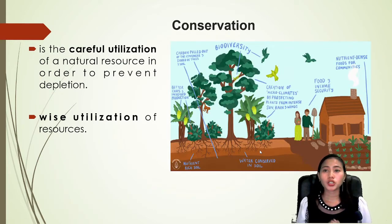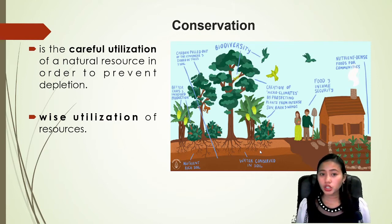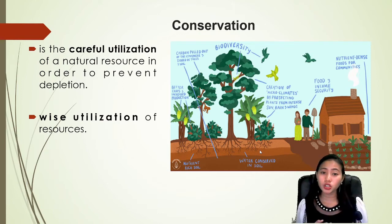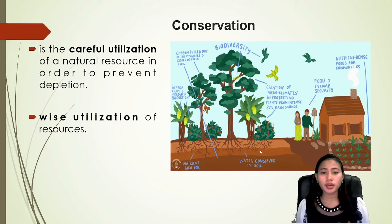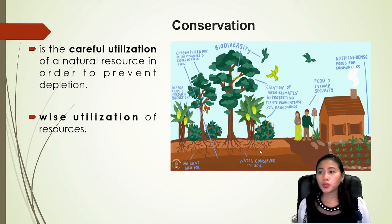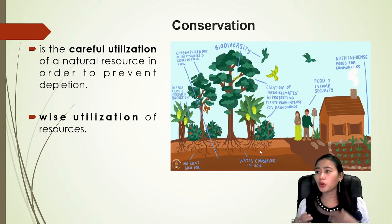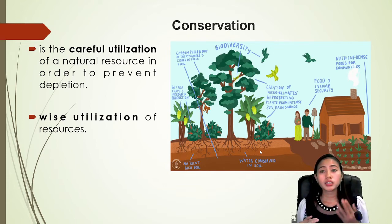Conservation is the careful or wise utilization of natural resources in order to prevent depletion. As you can see, the community practices intercropping to provide more food and income security.